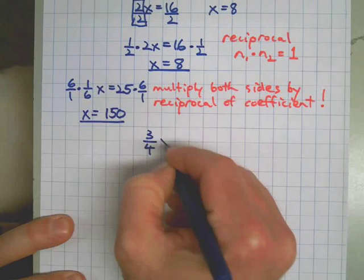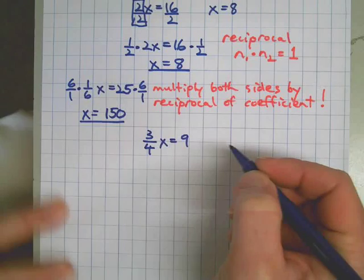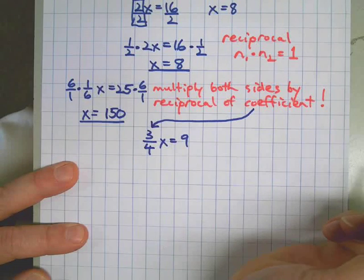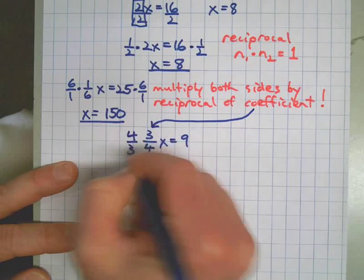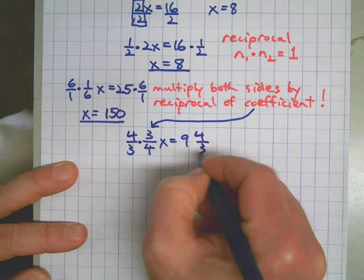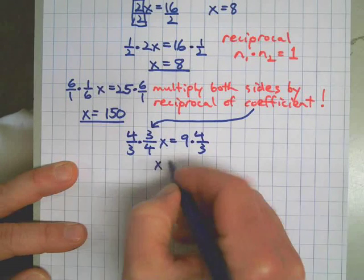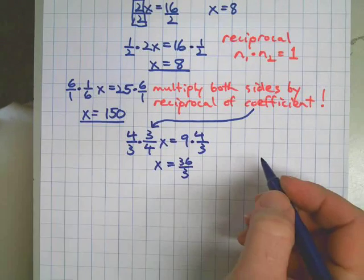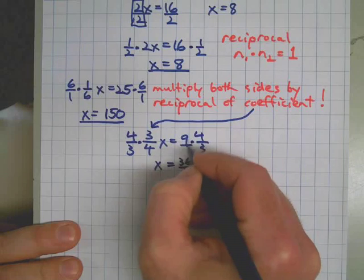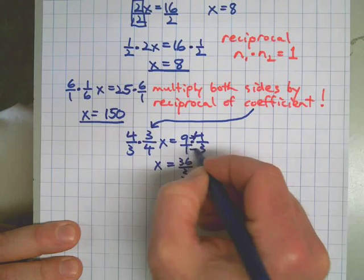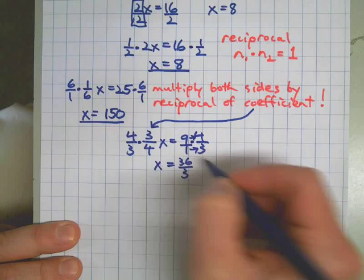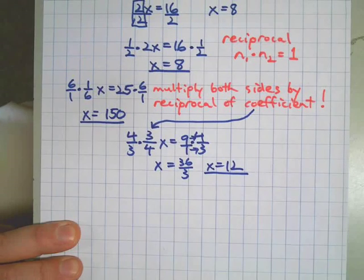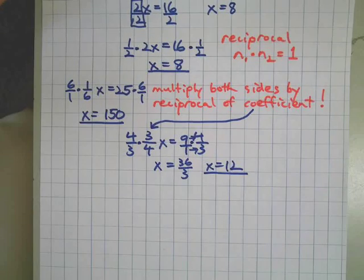Let's practice again! 3 fourths x equals 9. The reciprocal — here's the coefficient, the number next to x every time. Flip it. Multiply both sides. That makes a 1 over there, and this makes 36 on top of 3. How did I get 36 on top of 3? 9 is just like saying 9 over 1, and then we multiply straight across — so 36 on top, 3 as the denominator. How many 3's fit into 36? 12.